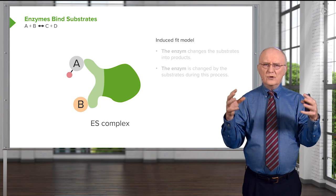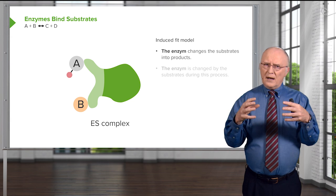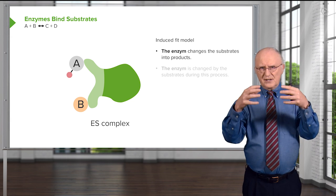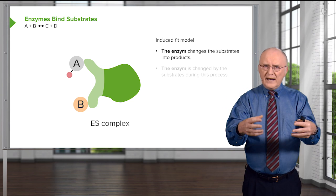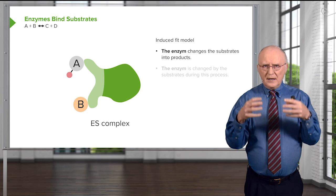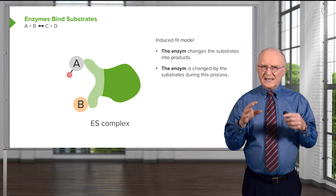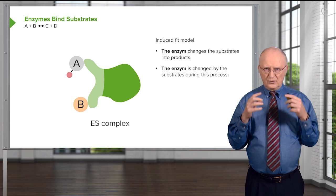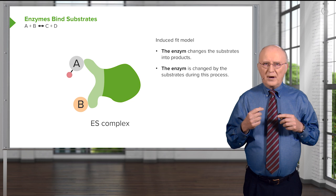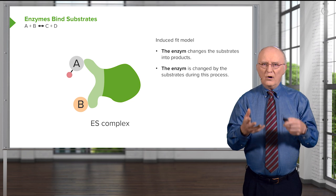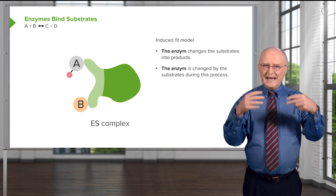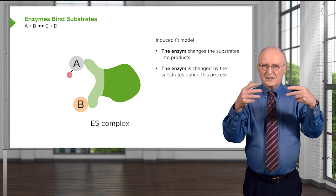This is the Koshland Induced Fit model of an enzyme. In the Koshland Induced Fit, it says that not only does the enzyme change the substrates into products, but transiently, during the catalytic process, the substrates change the enzyme and, as we will see, that's essential for this reaction to occur. So, the substrate binding has happened. We have formed, at this point, what we call the ES complex, Enzyme Substrate Complex.